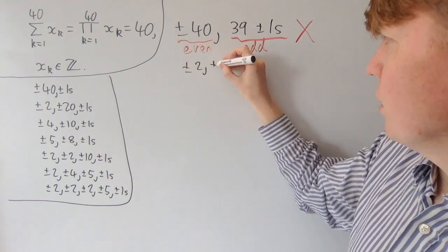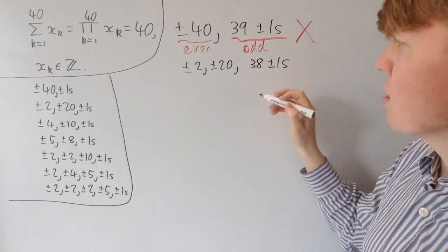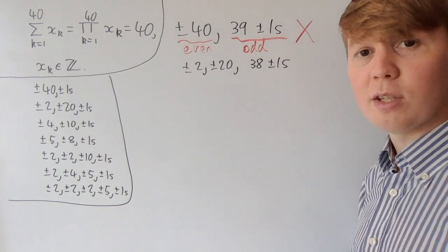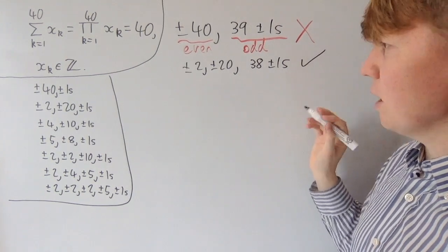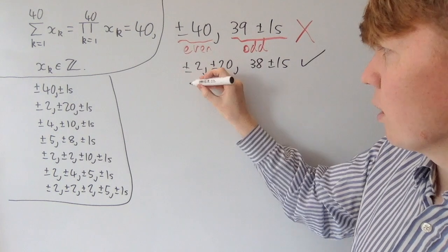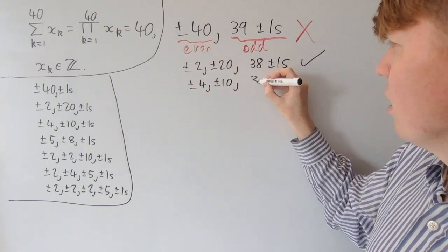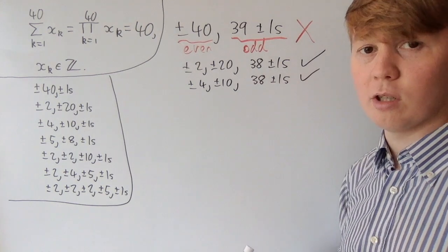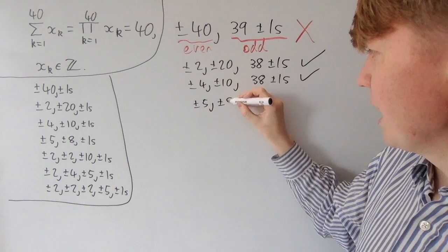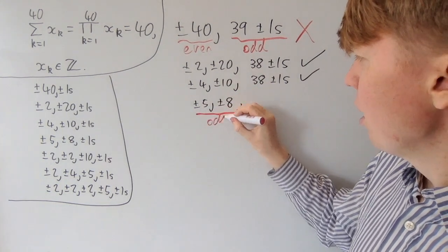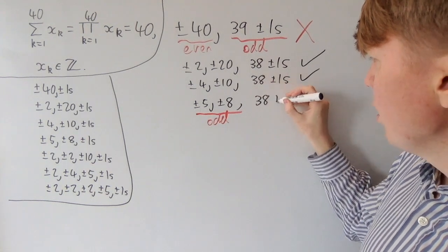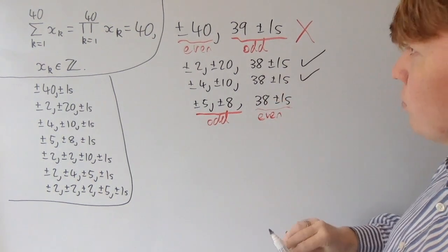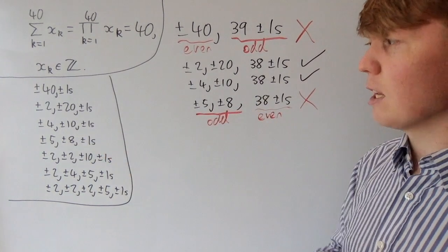For ±2 and ±20, we have only 38 ±1s remaining. We get an even contribution from the 2s and 20s, and also an even contribution from an even number of ±1s, so we can't rule this case out. Similarly for ±4 and ±10 with 38 ±1s — we have even plus even, so nothing to rule out. But for ±5 and ±8, we get an odd contribution from 5 and 8, while 38 ±1s give an even contribution — odd plus even can never equal 40, so we rule out the 5, 8, and 1s combination.